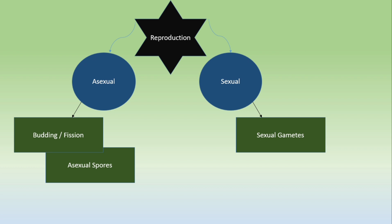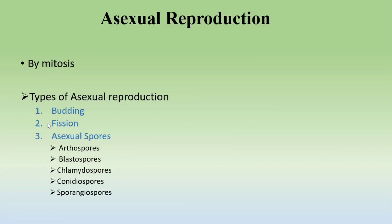Reproduction in fungi is divided into two categories: asexual reproduction and sexual reproduction. Asexual reproduction occurs by budding, fission, or through asexual spores. In sexual reproduction, there are sexual gametes which will ultimately give rise to sexual spores. Asexual reproduction occurs by the process of mitosis.